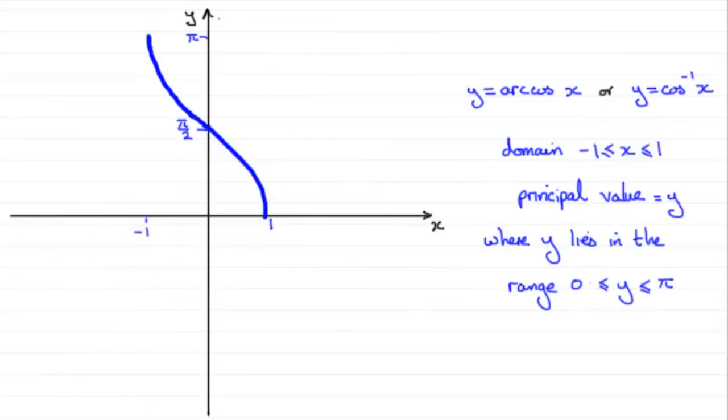And any value of y in this range is called the principal value. So in summary, what we've got is a graph looking like this. The graph of y equals arc cos x or y equals inverse cos of x with a domain that goes from minus 1 to 1 inclusive.